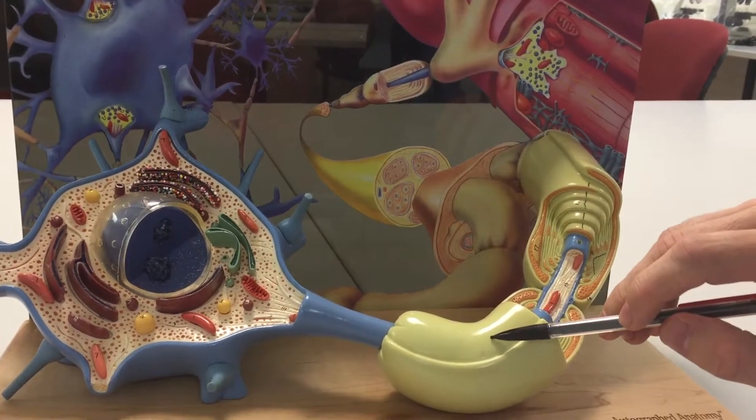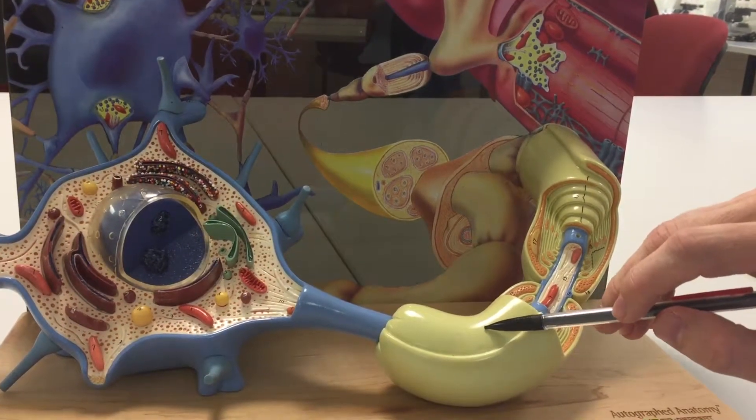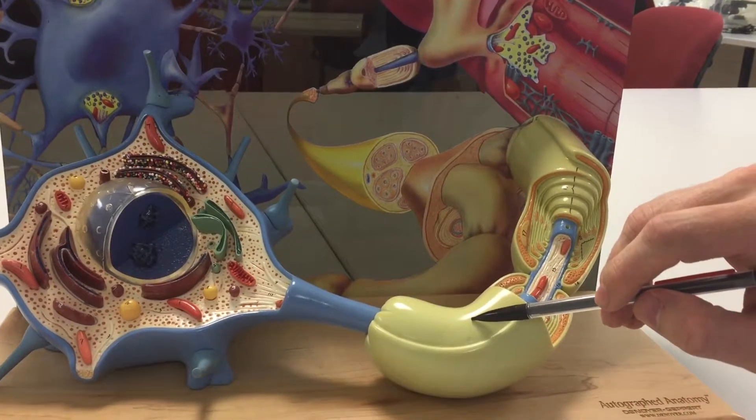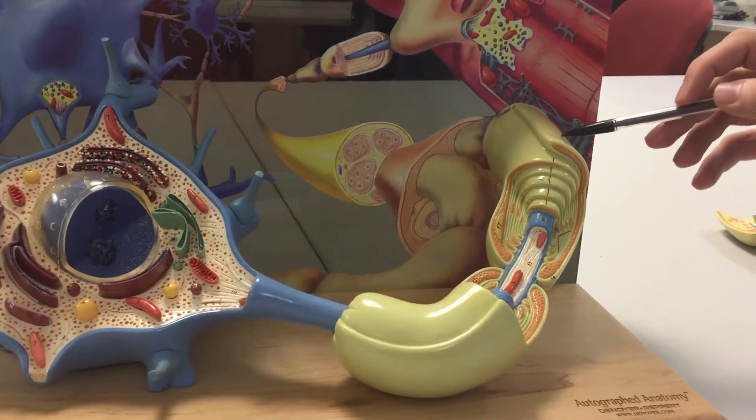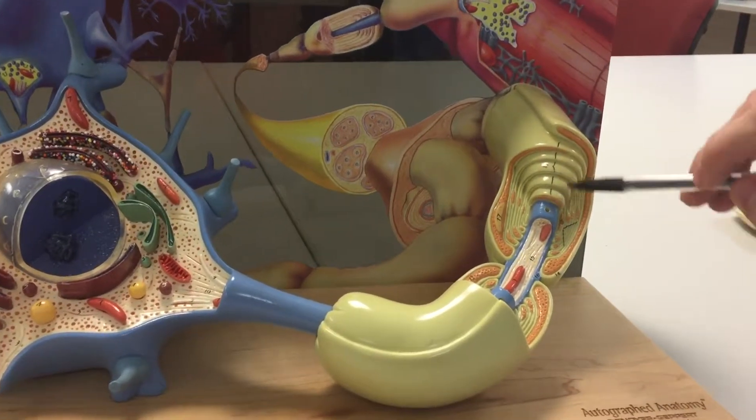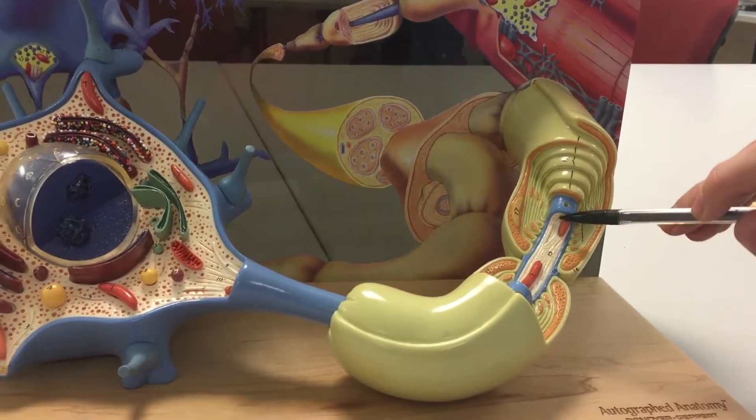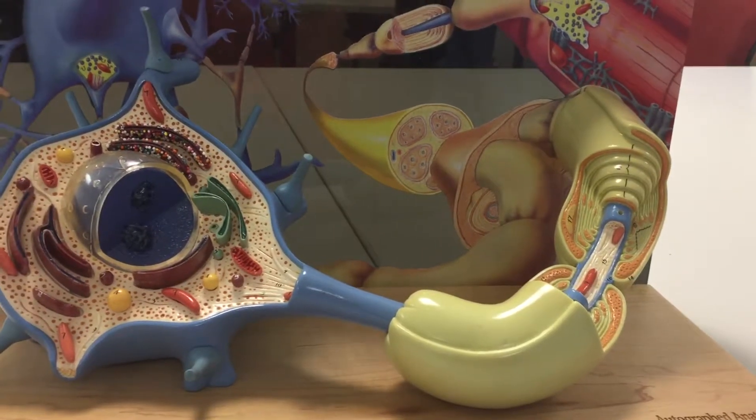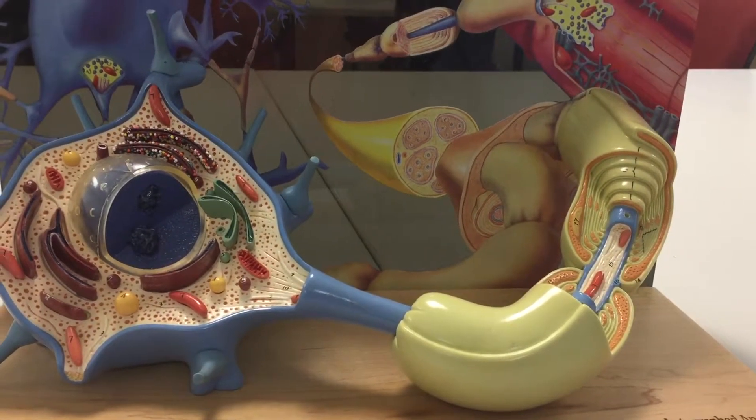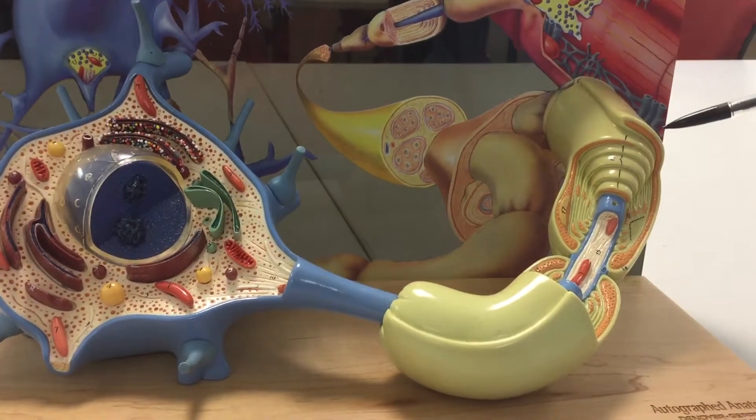This structure that surrounds the axon is called a myelin sheath. Here's another myelin sheath and as you can see it wraps many times around this blue axon here and it's responsible for speeding up the conduction of that action potential along the axon.